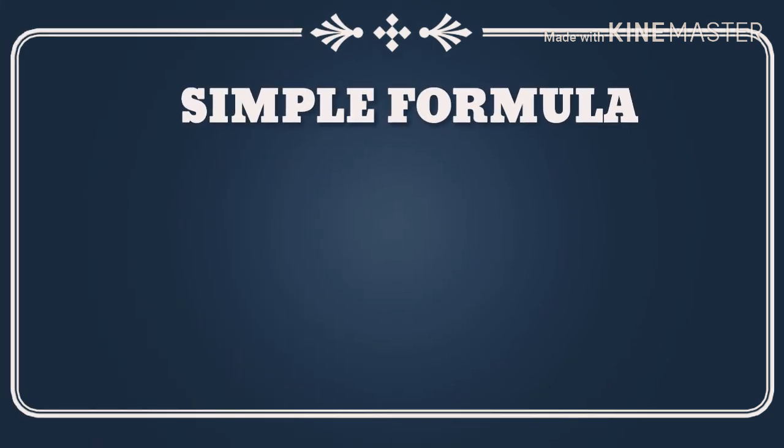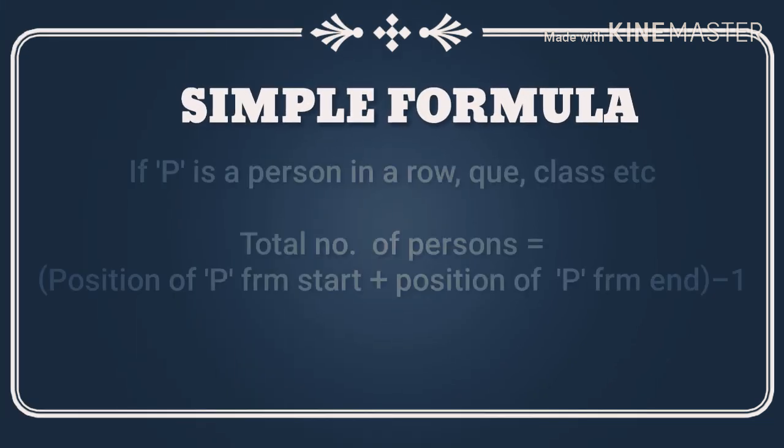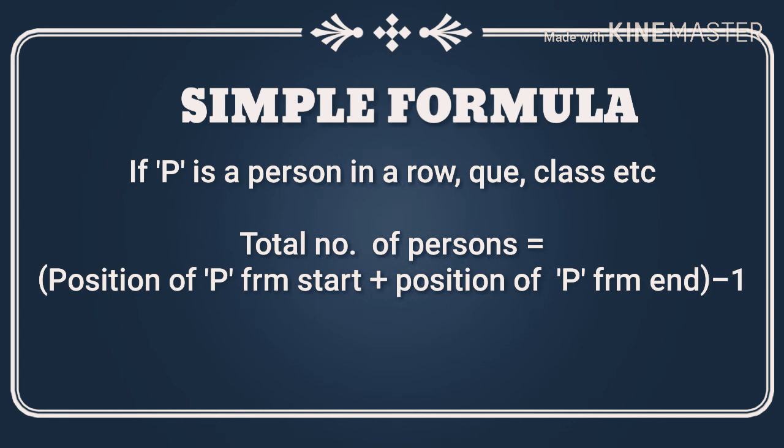Now we will learn a simple formula. We will learn a row and a cube. We will learn which class is already learned, where we will learn P. In my opinion, we will learn total number of persons. Position of P from start, plus position of P from end, minus 1.